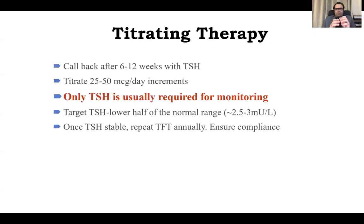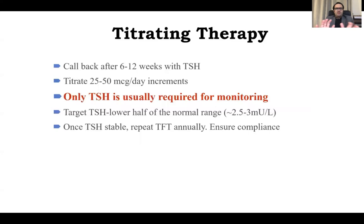In some patients we should not start with the full replacement dose — especially in coronary artery disease patients and the elderly, where we start with 25 to 50 mcg and then increase by 25 mcg every one to two months. After starting, we call the patient back in six weeks with TSH. TSH alone is usually required for monitoring, unless there are compliance issues in which we also do free T4. We titrate by 25 to 50 mcg per day increments — for example, if started on 100 mcg, we increase to 125 rather than 200. Target is TSH of 2.5. Once stable, TSH can be checked after three months and then at six-month intervals.